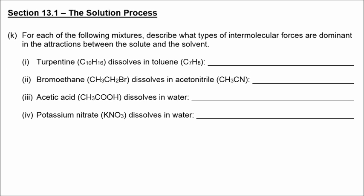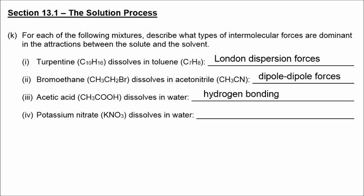Here we have a variety of attractive forces to talk about when forming attractive forces between solute and solvent. If two substances like turpentine and toluene are non-polar hydrocarbons, then we're talking about London dispersion forces. Bromoethane and acetonitrile are both polar but there's no hydrogen bonding, so polar molecules form dipole-dipole forces. Acetic acid and water both contain hydrogen bonding forces that would form as they mix together. Potassium nitrate dissolving in water would form ion-dipole forces.